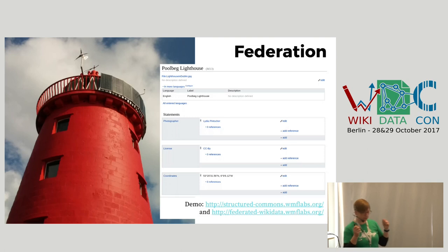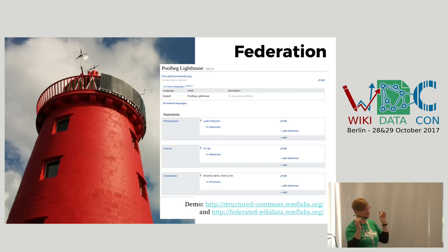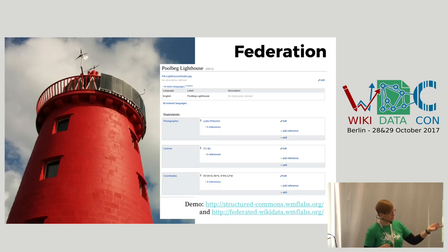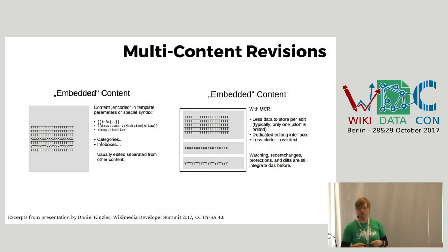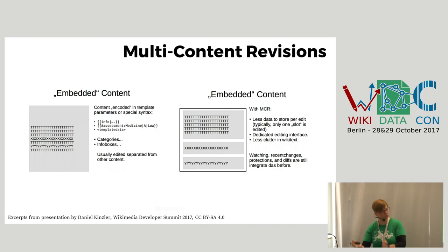Federation is the idea that you can have several wiki-based instances and integrate data from one instance into the other. A test version and demo version are already available at the URLs shown, and we are going to work on that further to integrate it into Commons. Multi-content revisions is groundwork that as a regular user you will not see, but it's a crucial component of the whole: you will be able to split file pages into several components, do edits on them separately, but still have the page as a whole that you can follow in your watchlist.